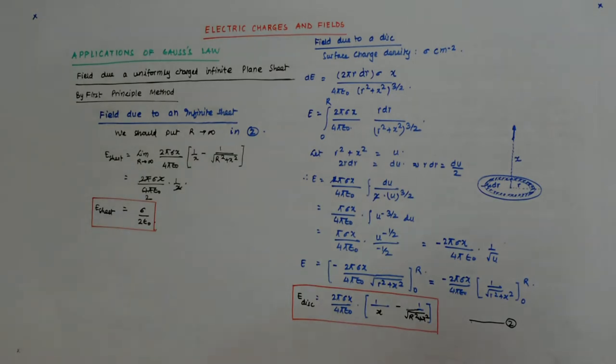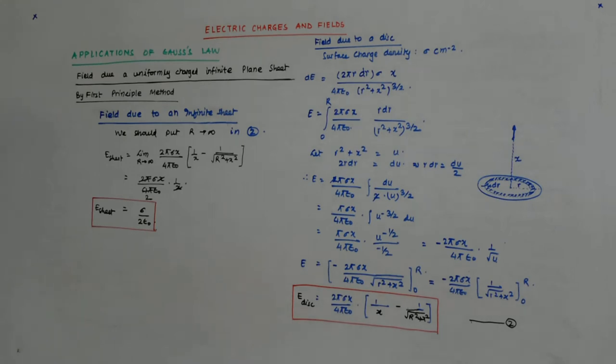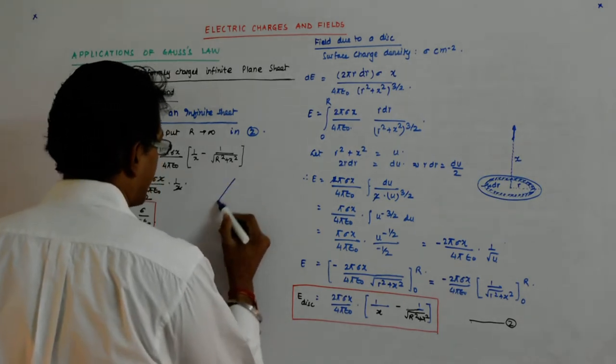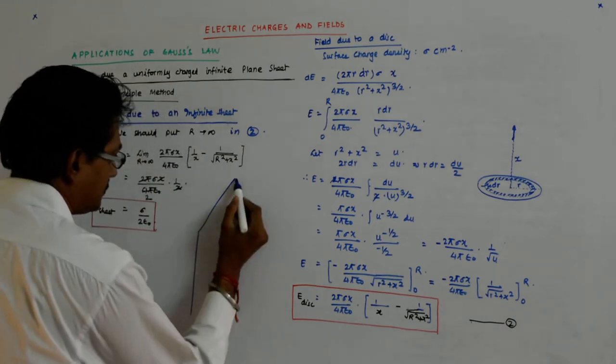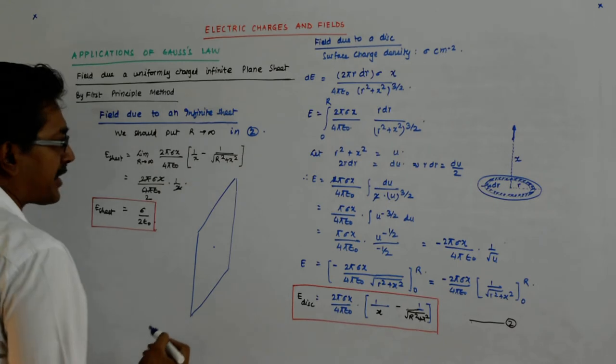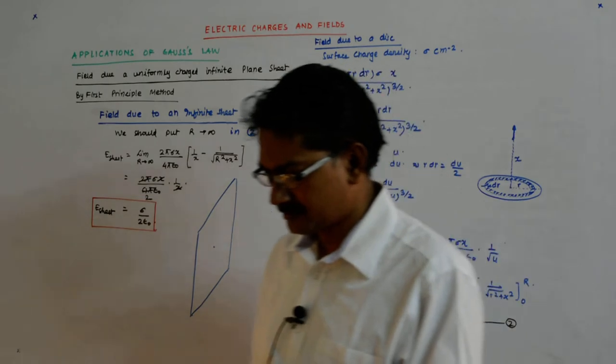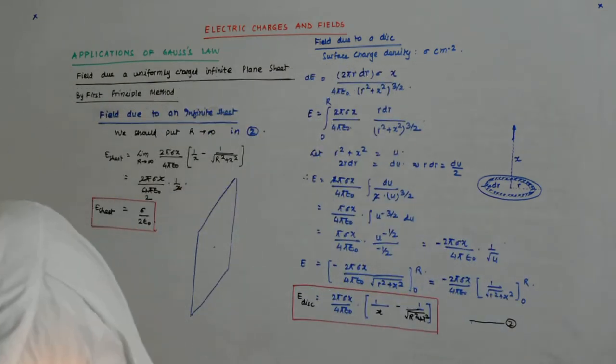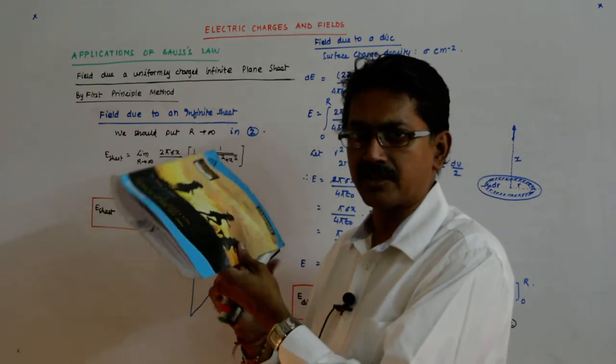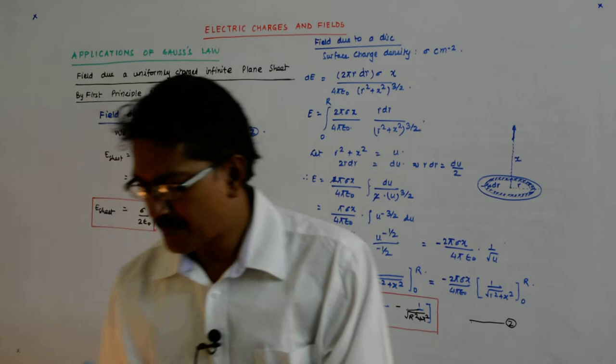So why is this happening that the field is constant irrespective of the distance? Try to think. Say this is the sheet. The closer you are to the sheet, what happens if I'm very close to this sheet? What is happening?